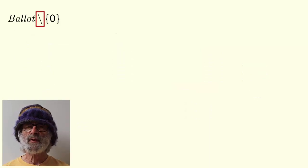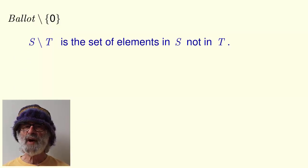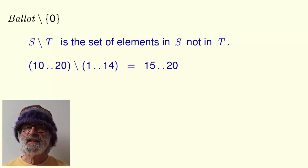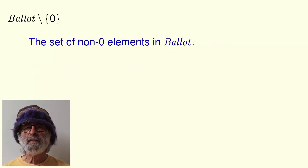This set minus operator is defined as follows. For any sets s and t, s set minus t is the set of all elements in s that are not in t. For example, the integers from 10 to 20, set minus the integers from 1 to 14, equals the set of integers from 15 to 20. So, ballot set minus the set containing only 0 is the set of non-zero elements in ballot.